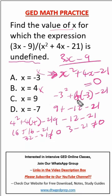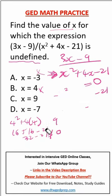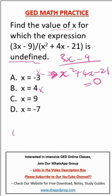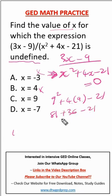Now let's test for 9. We have 9² + 4(9) - 21. 9 squared is 81, 4 times 9 is 36, so 81 plus 36 minus 21. Clearly this will not give us zero, so it is wrong.